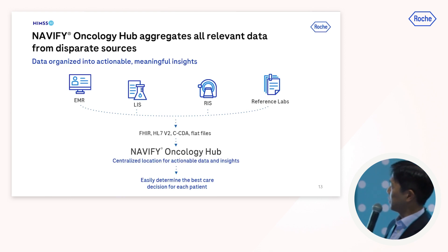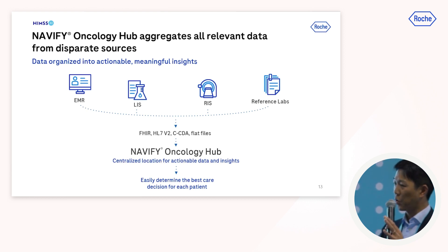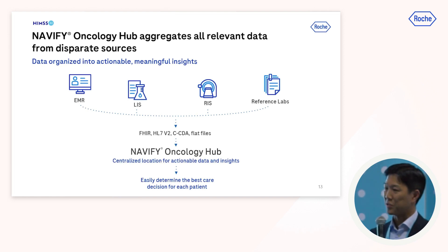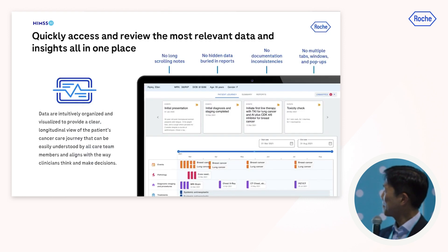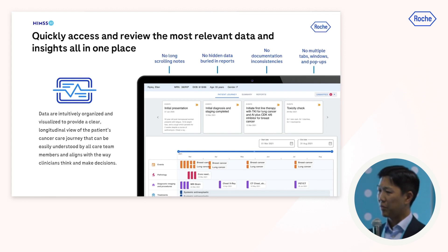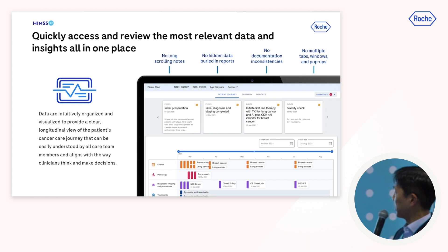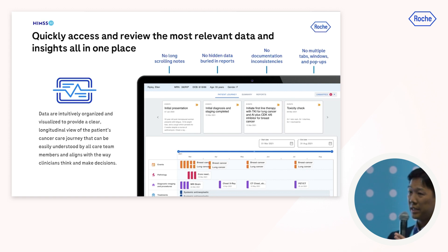So how does Navify Oncology Hub do this? It takes heterogeneous data using a variety of interoperability standards and collates it into one place. The goal is to put all relevant data together on one interactive screen, without having to navigate to a bunch of different places — the most relevant data an oncologist needs to make decisions, easily accessed by anybody. No more scrolling through notes, no more hidden data buried in reports, no more documentation inconsistency issues, and no more multiple tabs and windows.